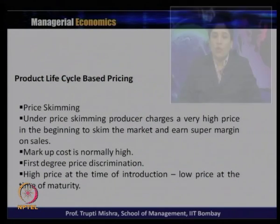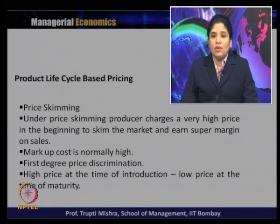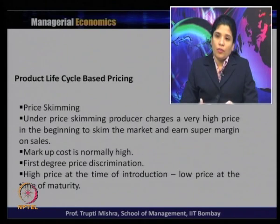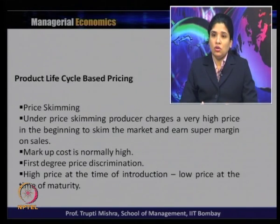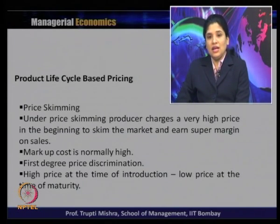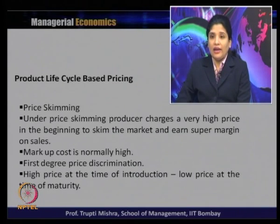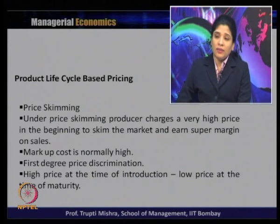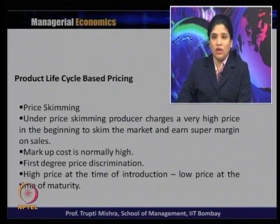On that basis, there are three pricing techniques under product life cycle based pricing. The first is price skimming, where the producer charges a very high price in the beginning to skim the market and earn a super margin on sales. The markup is normally high. This is a typical example of first degree price discrimination, where the monopolist tries to identify the consumer group ready to pay more and charges them a higher price. High price at introduction, low price at maturity.